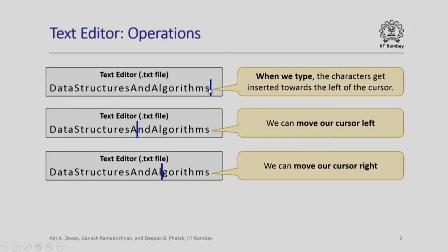In any text editor we are able to move the cursor — for example, we can move the cursor to the left or to the right. At the cursor point we have the option of inserting a new character or deleting a character either to the left or right. How can we simplify this notion of inserting or deleting characters at the cursor and moving the cursor left and right using stacks?